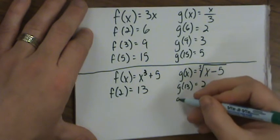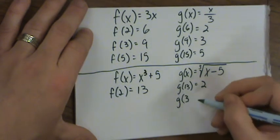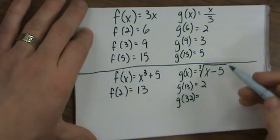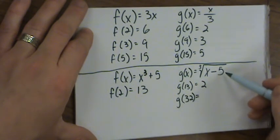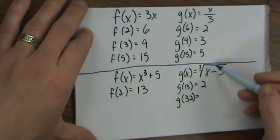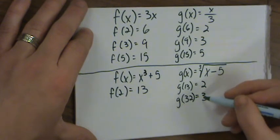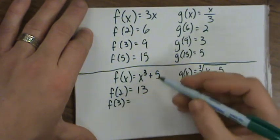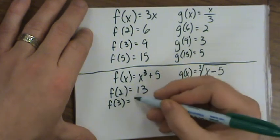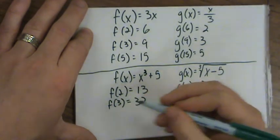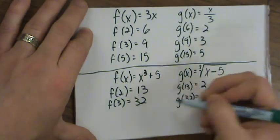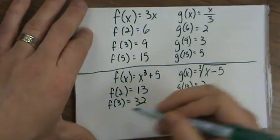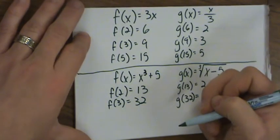Let's also check going the other direction. g of 32 is the cube root of (32 minus 5), which is the cube root of 27, which equals 3. Then f of 3 is 3 cubed plus 5, which is 27 plus 5, equals 32. So 32 went in and 32 came back out. This confirms the undoing relationship — these functions are inverses of each other.